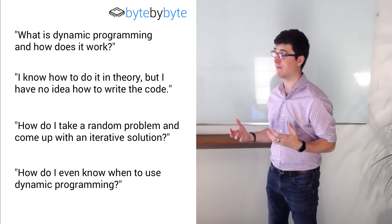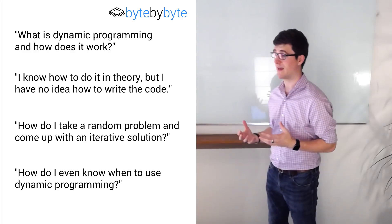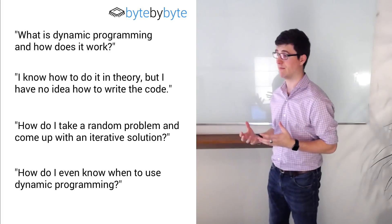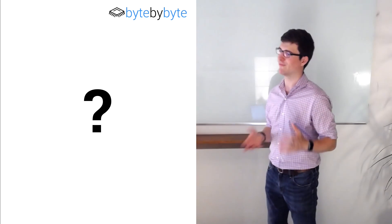For a long time, people would ask me how to solve dynamic programming problems and I didn't have a good response for them. The best advice I could give was just to go do a bunch of problems and look for the similarities between them. There is a lot of overlap between different dynamic programming problems, so in theory that's good advice, but they didn't even know what to look for. Unsurprisingly, they really didn't find that very helpful.